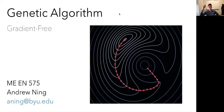We're going to continue our journey into gradient-free methods today, talking about a genetic algorithm. This is a popular and well-known method for gradient-free optimization. This will actually be a two-part thing — we're going to talk about the binary form and then next time we'll talk about the real-valued version that allows for more continuous design variables.